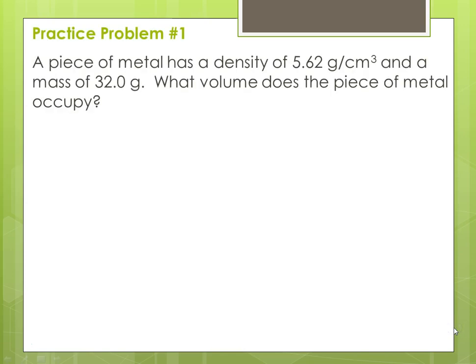Practice problem one. A piece of metal has a density of 5.62 grams per centimeter cubed and a mass of 32.0 grams. What volume does the piece of metal occupy? You have to read the problem — this is talking about density. We know our equation for density is d equals m over v, where d is density, m is mass, and v is volume.